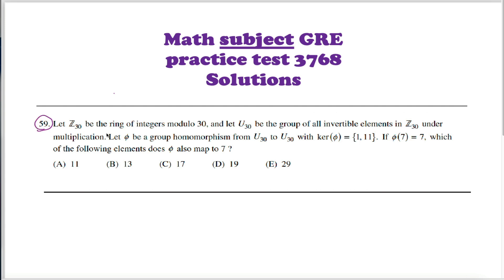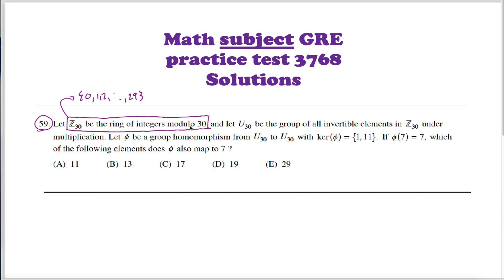Question 59 — more with group theory or ring theory. What's going on in this problem is we're starting out with Z30, the ring of integers mod 30. Think of all the integers from 0 up to 29 with addition and multiplication defined mod 30.